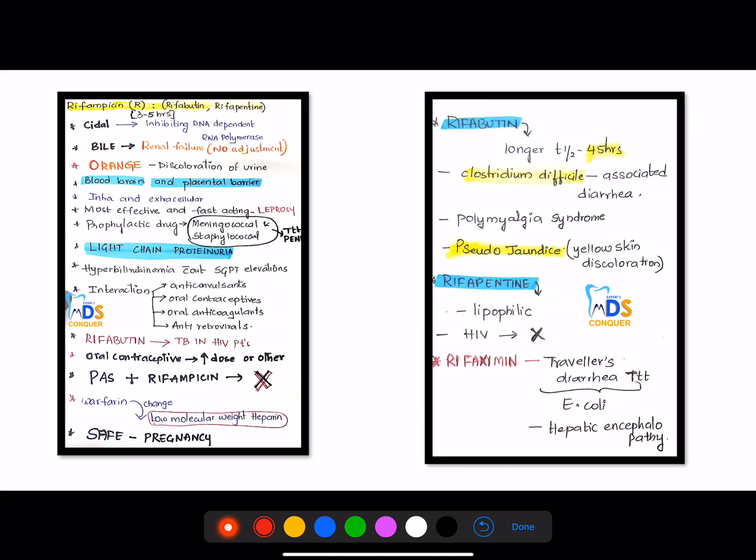Then coming to rifampicin. And other types of drugs like rifampicin are rifabutin and rifapentine. Remember the half-life of rifampicin is 3 to 5 hours, and it is used as only cidal drug. And action is through inhibiting DNA-dependent RNA polymerase. Bile, it can be secreted in the bile.